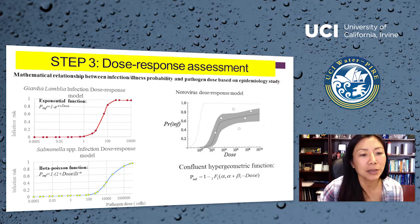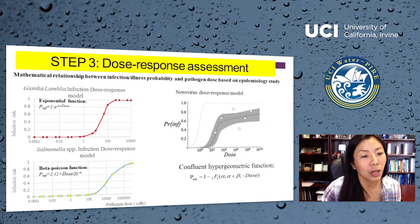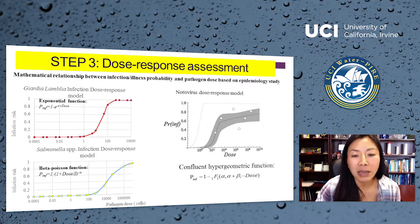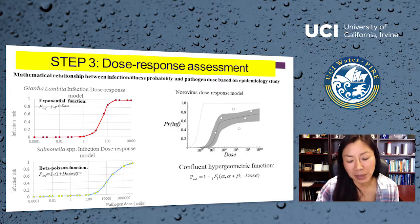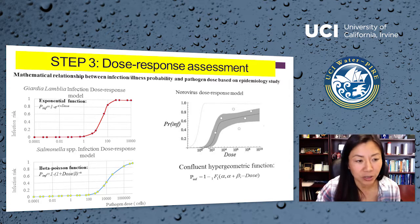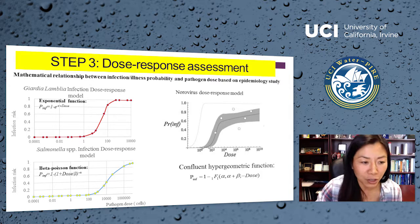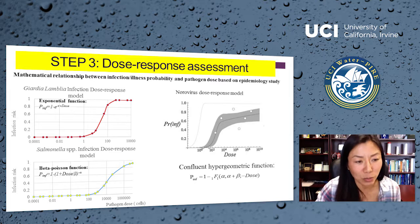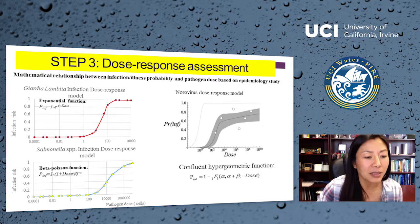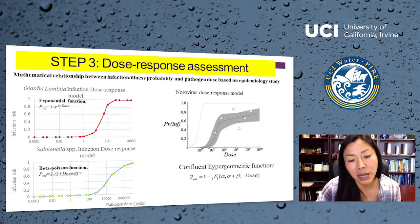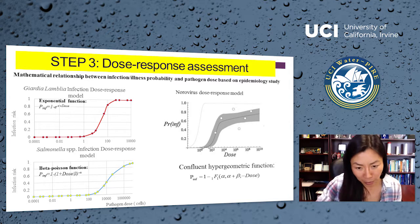The third step of risk analysis is dose-response assessment — a mathematical relationship between the infection probability and the dose, based on epidemiology studies. Most QMRA researchers use historical hospital data collected by epidemiologists. By fitting infectious risk against dose, you find a best-fit function called the dose-response curve. Giardia can be characterized as an exponential function, salmonella as a beta-Poisson function, and norovirus — the most complex — can be fit by a confluent hypergeometric function. Each of these functions is illustrated on the bottom of each graph.